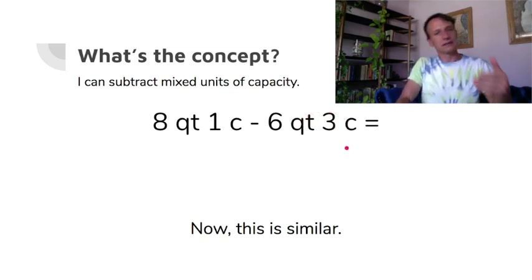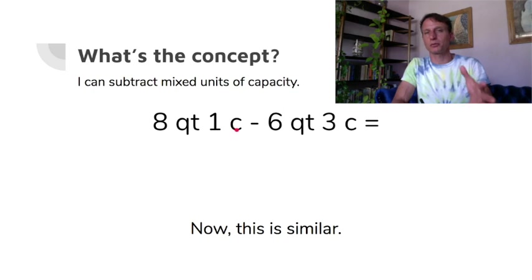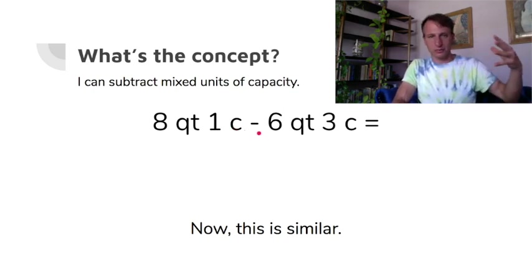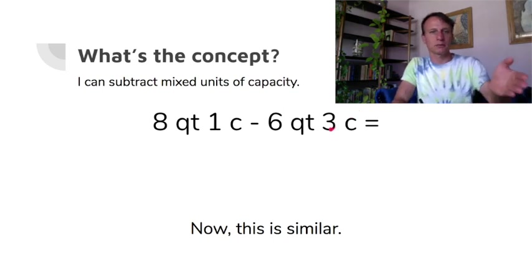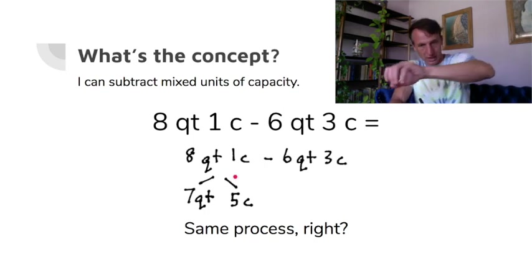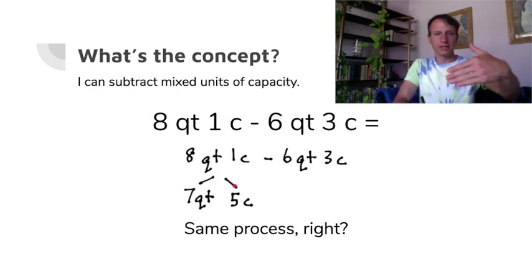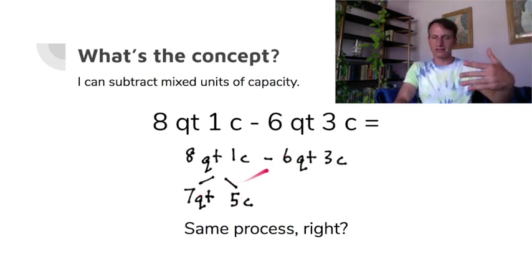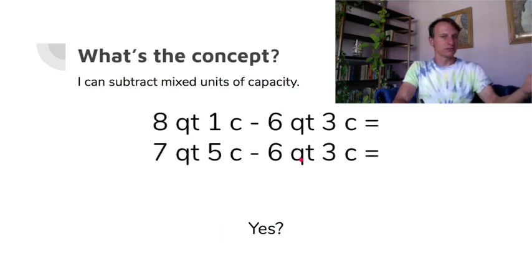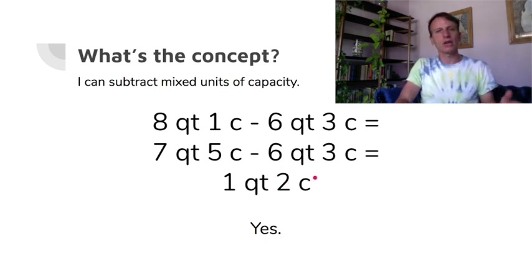Now subtracting quarts and cups — this requires regrouping, same as regular subtraction or with fractions and decimals. Take the eight quarts, set aside seven, pour out the eighth quart into four cups — with the one cup already there, that's five cups. So now: seven quarts and five cups minus six quarts and three cups. Seven minus six is one quart, five minus three is two cups — answer: one quart and two cups.